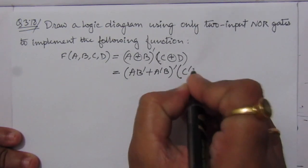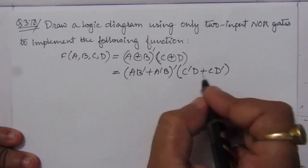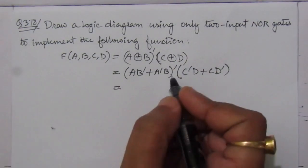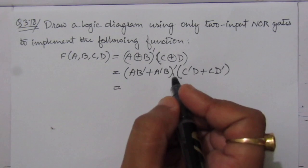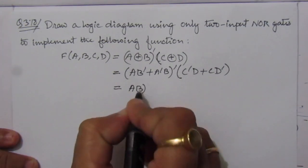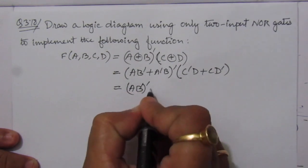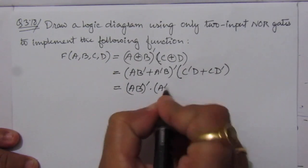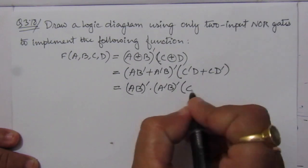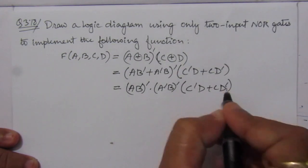So (A XNOR B) expanded gives us (A·B̄ + Ā·B) complemented. And C XOR D is C̄·D + C·D̄. Before we multiply, we have to take the complement, so we get (A·B̄) complemented · (Ā·B) complemented, then multiplied by (C̄·D + C·D̄).